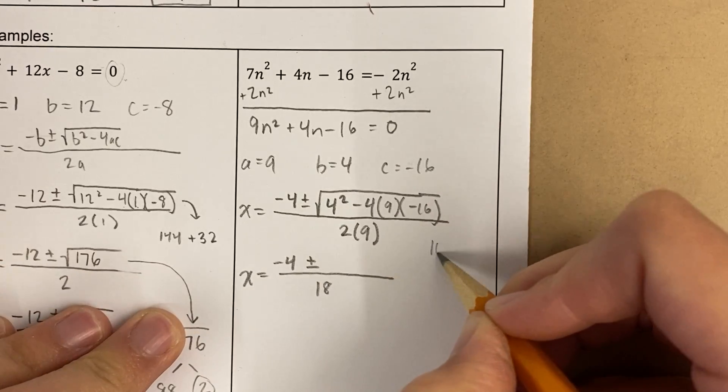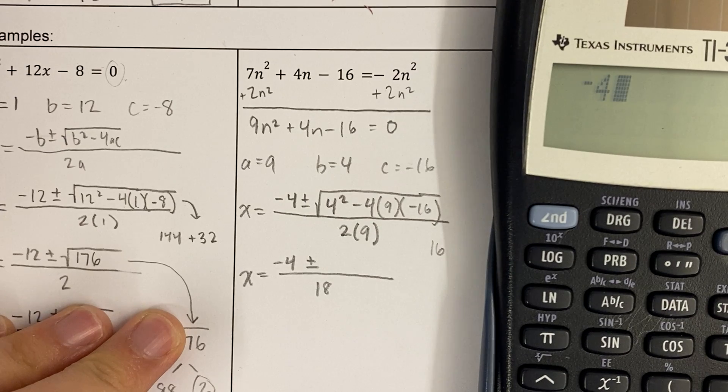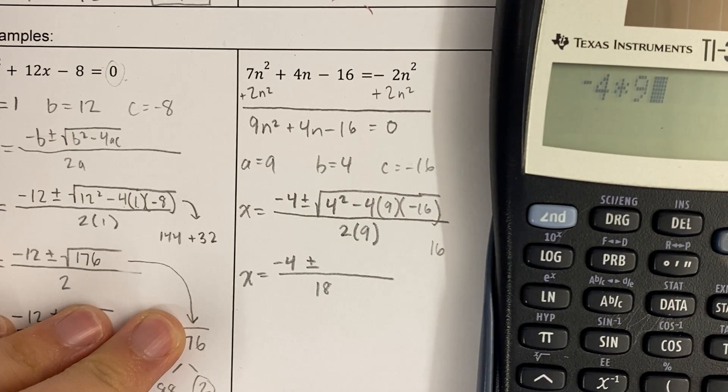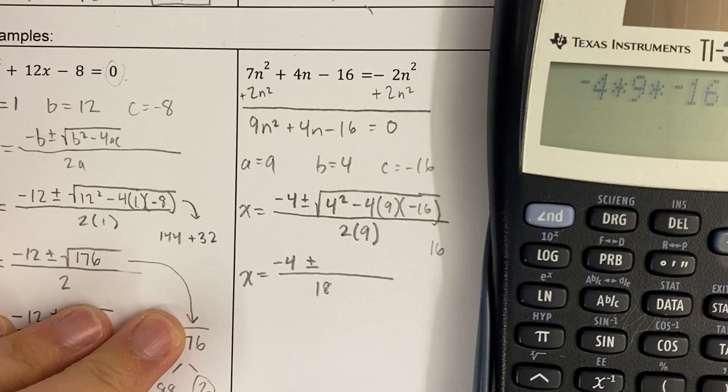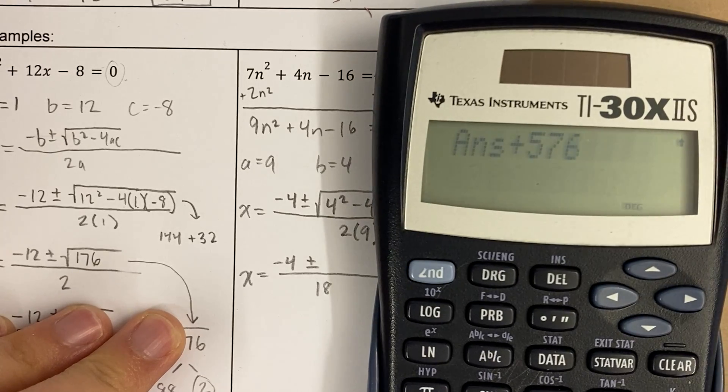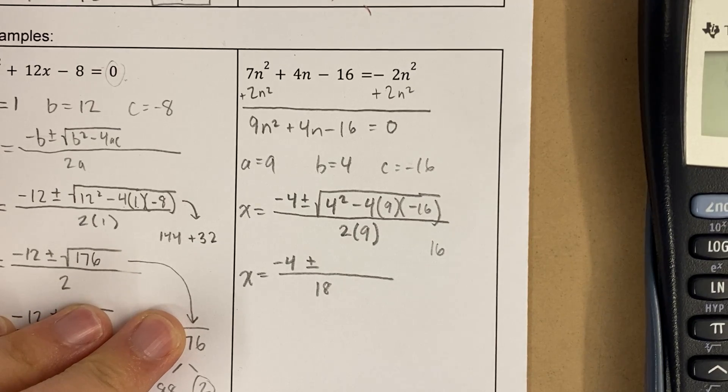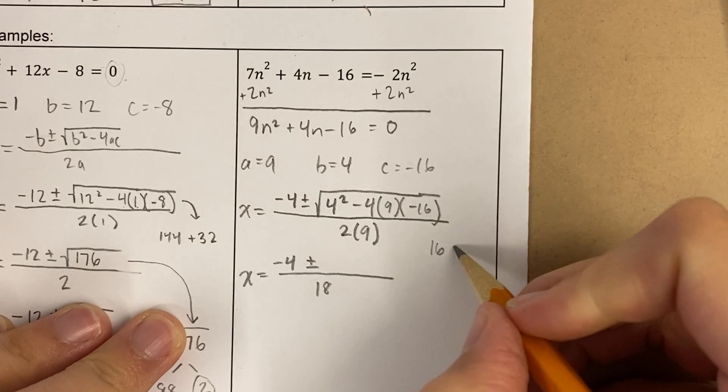Okay, this is 16, and then I'm just going to use a calculator for this one. I'm feeling a little lazy. Negative 4 times 9 times negative 16. I get 576, and I'm going to add that to 16. Ooh, that is not what I meant to do. 576 plus 16 is 592.